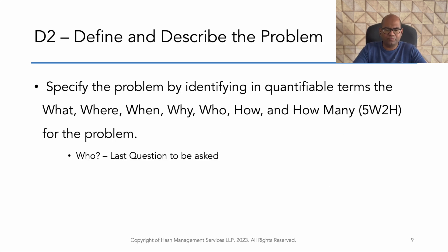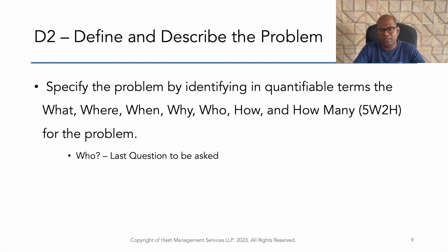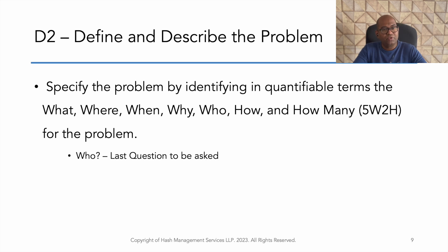D2 is to define and describe the problem. You look at the last 3 months or 6 months of data. You find traceability and a quantified number for the defect. You analyze the data using the 5W2H framework: What, Where, When, Why, Who, How, and How Many.